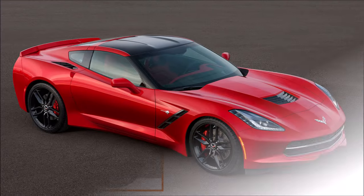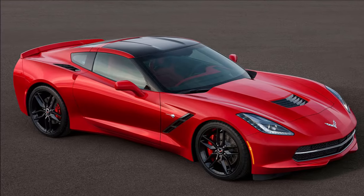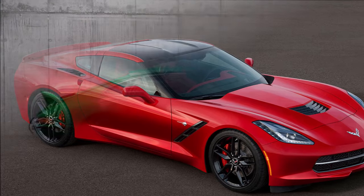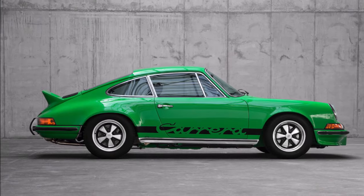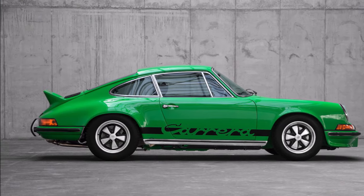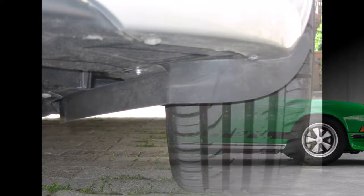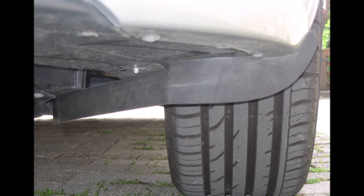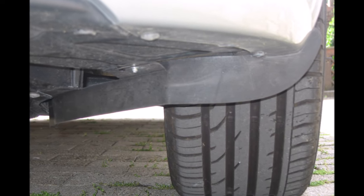Spoilers are also used in a lot of different shapes around the car — the 911 ducktail for example, or the wheel spoilers to guide air around the wheels to reduce drag.